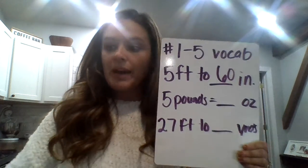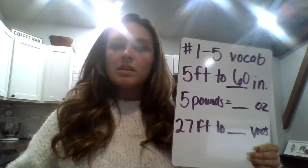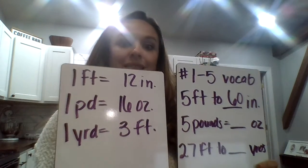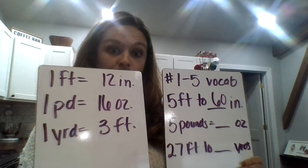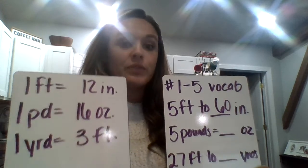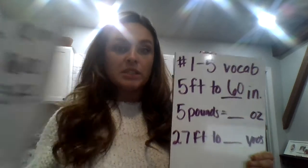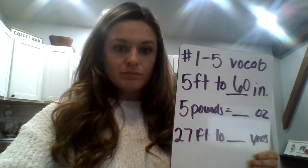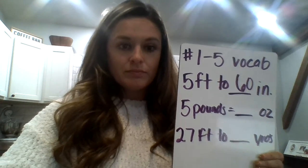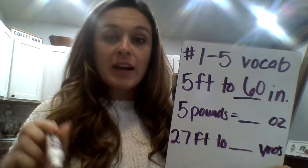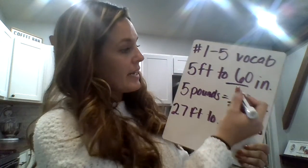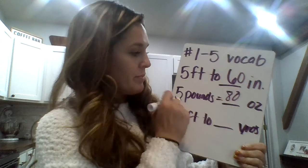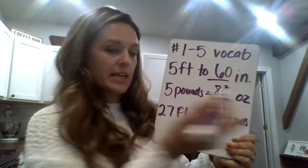Now the next one is doing pounds to ounces. One pound equals 16 ounces. So if we're checking for five pounds, we need to do five times 16, and five times 16 is 80. So five pounds equals 80 ounces.